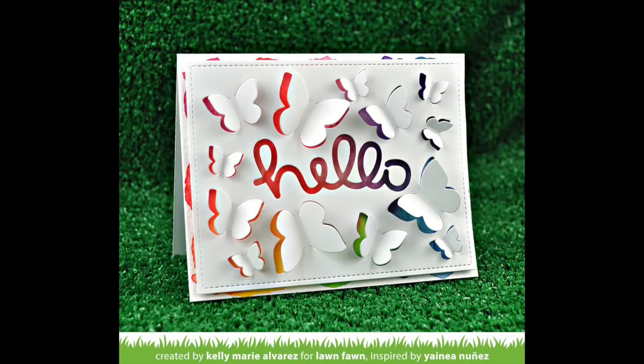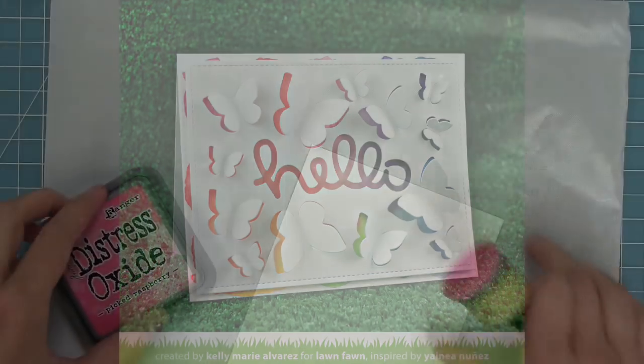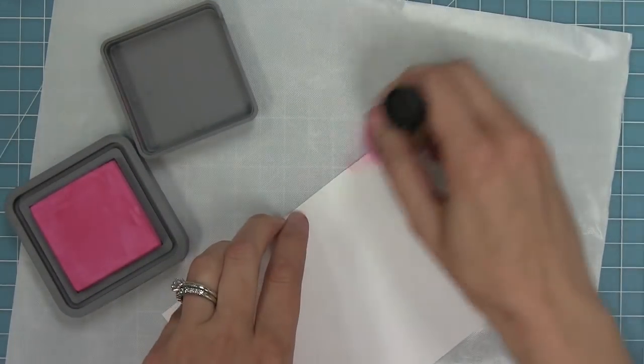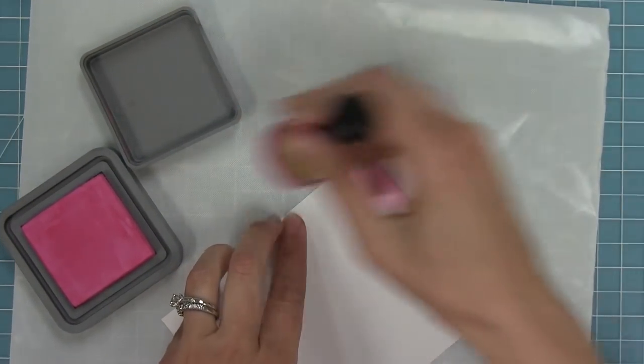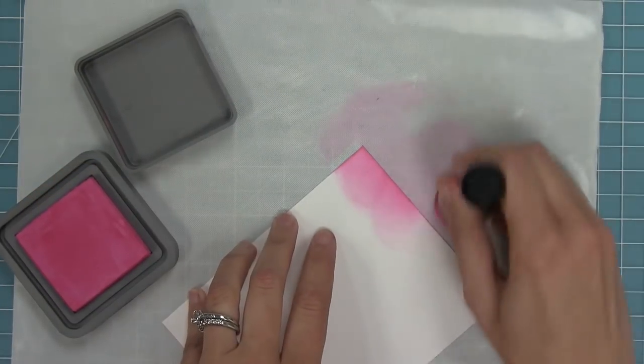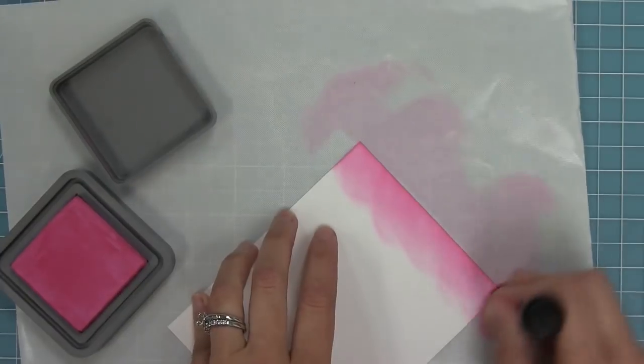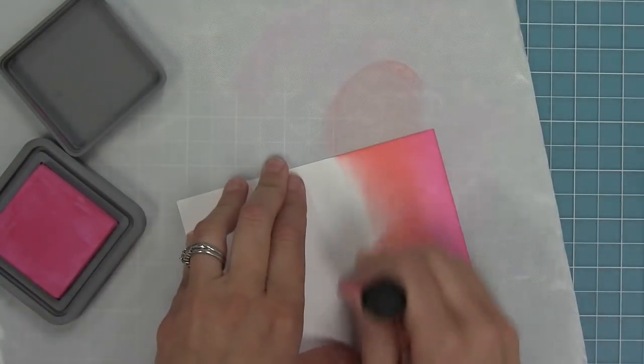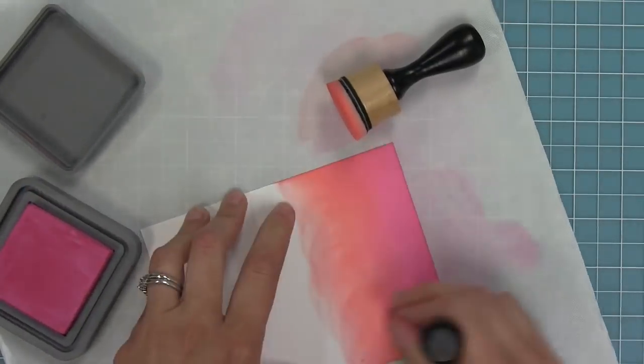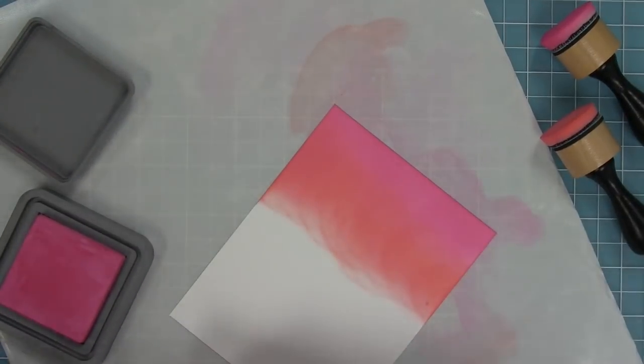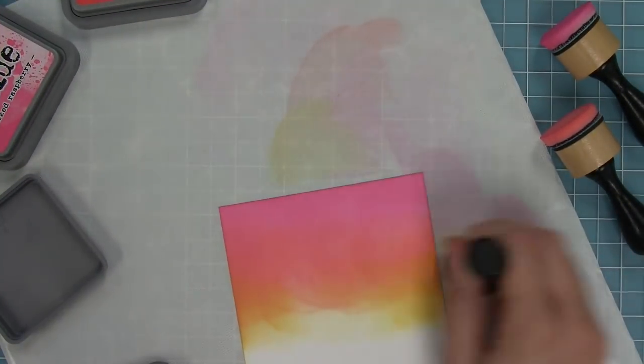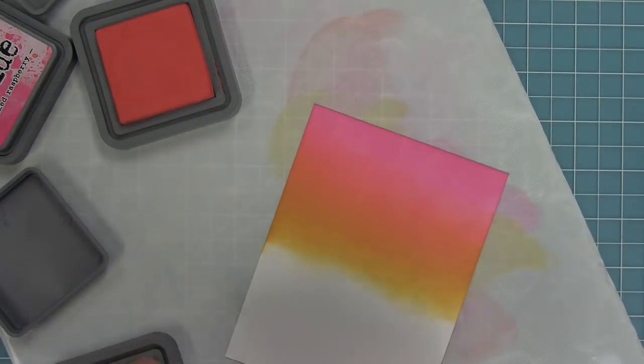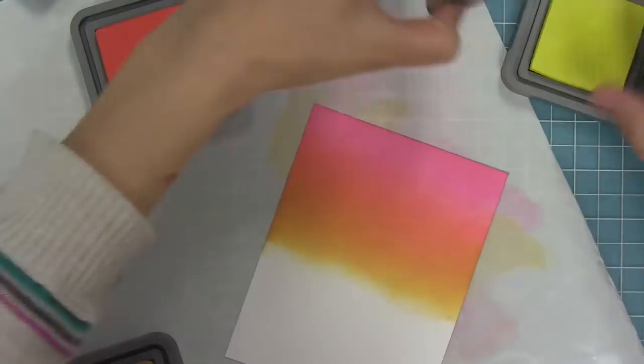Next up I'm going to be recreating a gorgeous card by Kaye. Kaye used the original distress inks on her card which was a really bold look, and because I just got my oxides I decided to use my oxides instead and it kind of made the card a softer look. I'm using picked raspberry, abandoned coral, fossilized amber, and then squeezed lemonade to create this cool kind of sunset looking gradient.